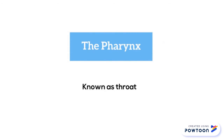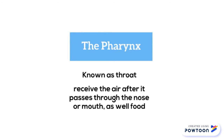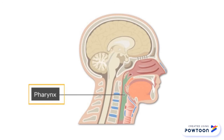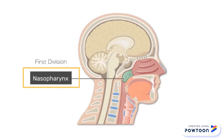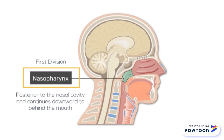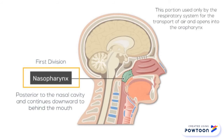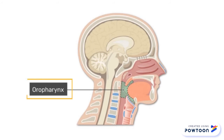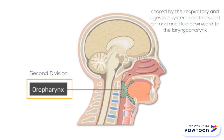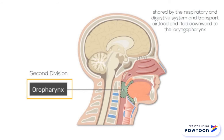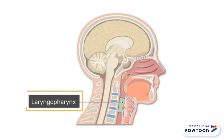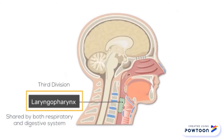The pharynx, known as the throat, receives air after it passes through the nose or mouth. There are three divisions of the pharynx: the nasopharynx is the first division, the oropharynx is the second division, and the laryngopharynx is the third division.